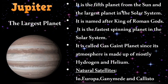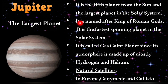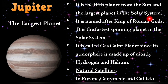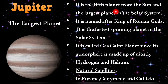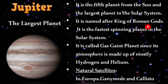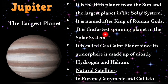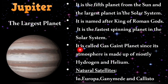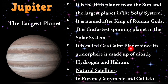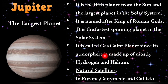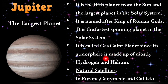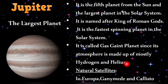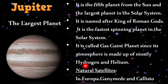Jupiter is the largest planet and the fifth planet from the sun. It is named after the king of the Roman gods. It is the fastest spinning planet in the solar system and is called a gas giant since its atmosphere is made up mostly of hydrogen and helium. Its natural satellites include Io, Europa, Ganymede and Callisto.